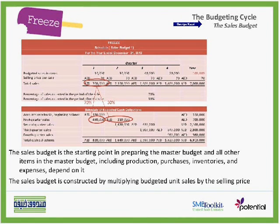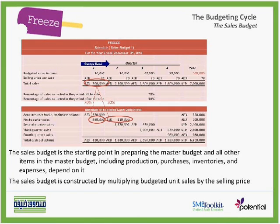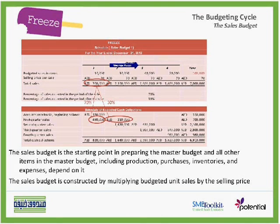This schedule that we have in front of us contains the quarterly sales budget for each quarter — the first quarter, the second quarter, the third and the fourth quarter — and of course we have a total for the whole year. You notice from the schedule that the company plans to sell 100,000 cases of popsicles during the year, with sales peaking in the third quarter of each year.